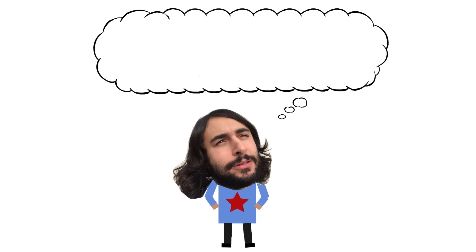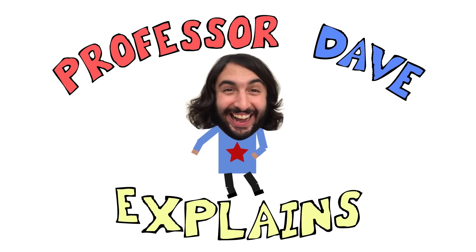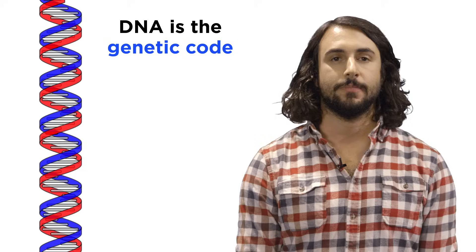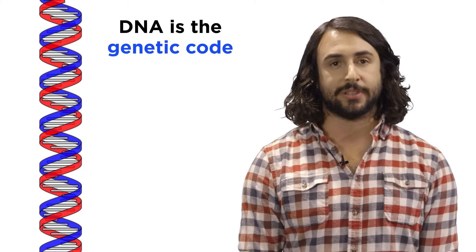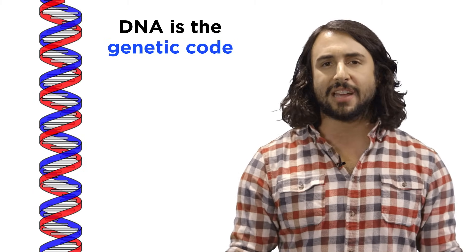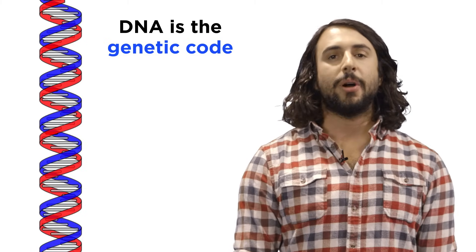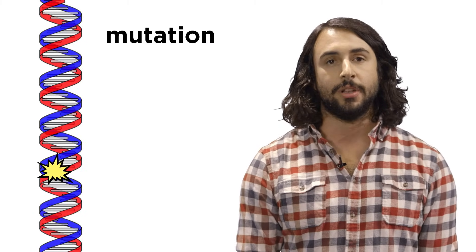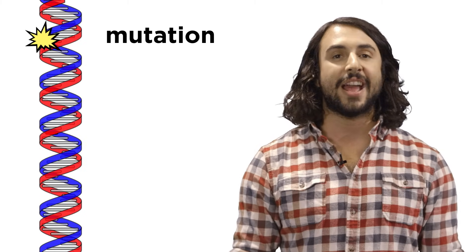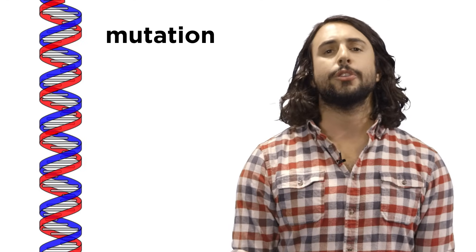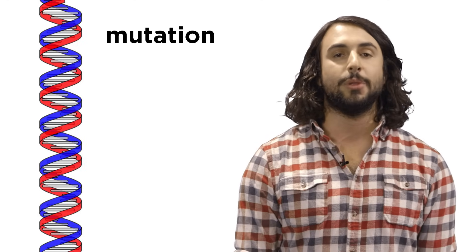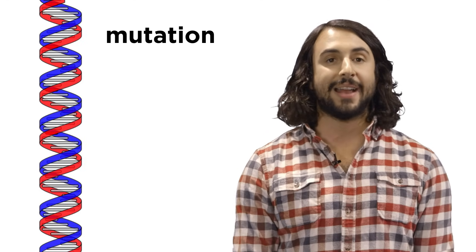Professor Dave again. Let's learn about the mechanisms of DNA damage and repair. As we've learned, your DNA is the template from which everything inside you is built, so it's incredibly important that nothing happens to this code. But your DNA is constantly at risk of mutation, which means a change to the genetic information in a cell, and this can happen due to a variety of factors. Let's learn about some of the different ways that mutations arise and what your body can do about it.